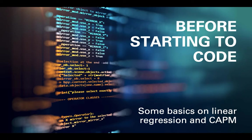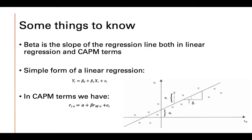Before we start coding, let's cover at least some basics on linear regression and CAPM. That is, the beta is the slope, which you are seeing here, of the regression line both in linear regression and CAPM terms.